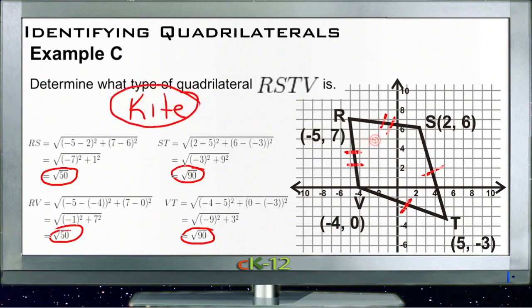And we know it's not a dart because all of our angles are punched out. In other words, this is a convex figure rather than a concave figure. That's all we got.